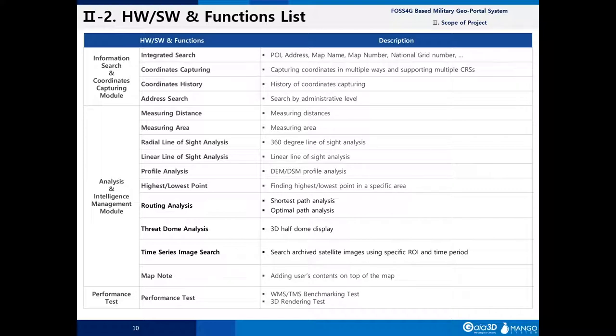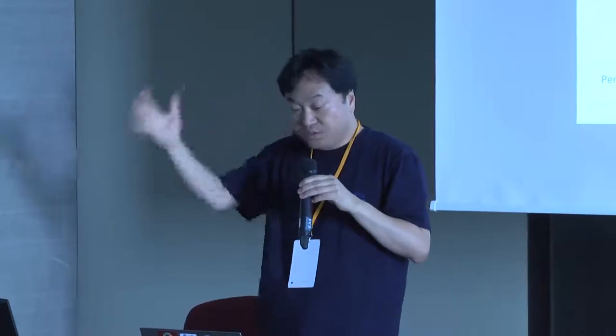We also needed to record coordinate history and address search. The system provides measuring tools for distance and area. As analytic functions, we provide radial line-of-sight analysis, linear line-of-sight analysis to assess the possibility of assassinations, terrain profile analysis, highest and lowest point detection, routing like Google Maps, threat domes — which are half domes — and map notes among other things. Finally, we carried out a performance test as part of the site acceptance test.